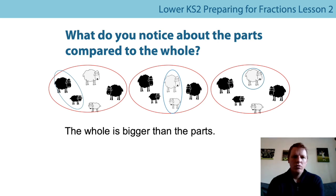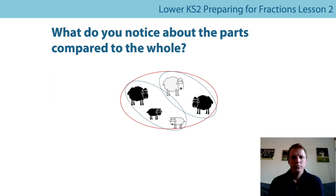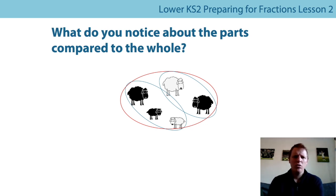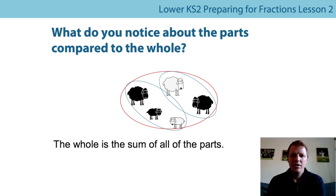The parts are smaller than the whole — can you say that? I wonder if that's always true. Here I've again shown the whole in red and the parts in blue. Is it still true? Hopefully you can spot that actually they are both the same size, because we've circled all of the parts, we've also circled the whole. So a way we can say that is: the whole is the sum of all of the parts.